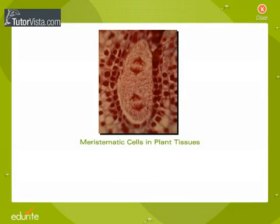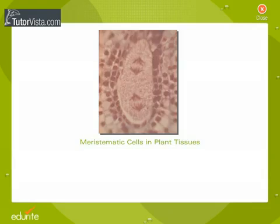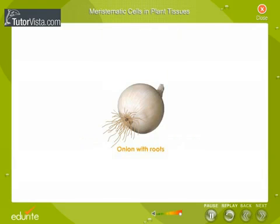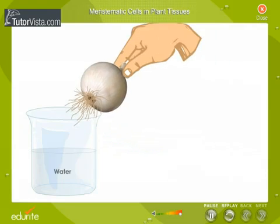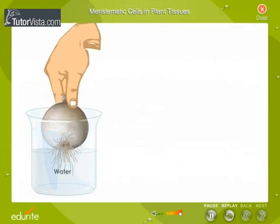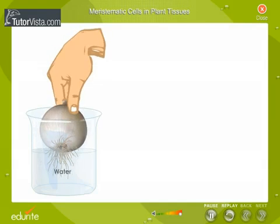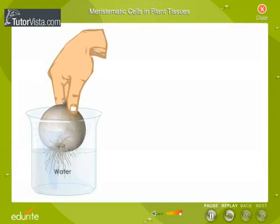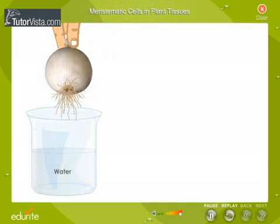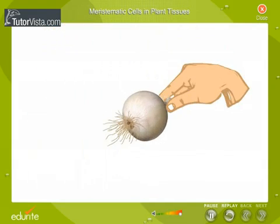Meristematic cells in plant tissues. Take a fresh onion along with its roots. Wash the roots with water and cut a longitudinal section of the root tip.